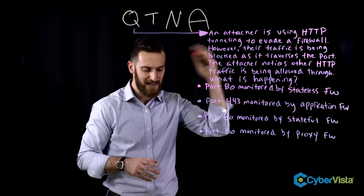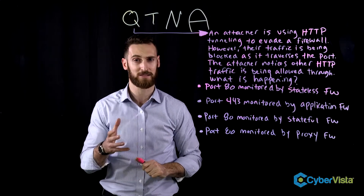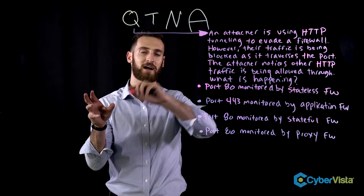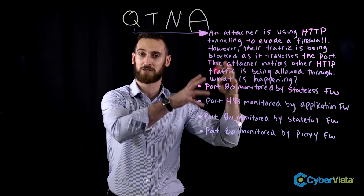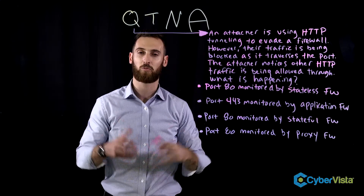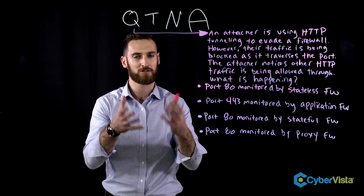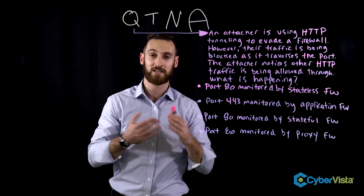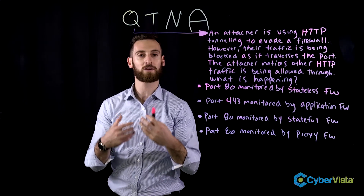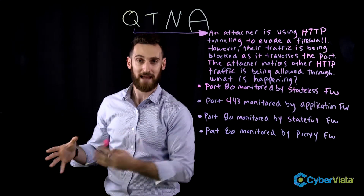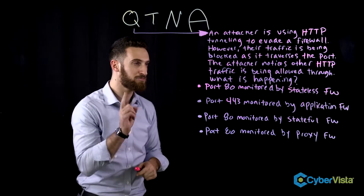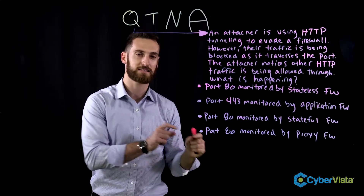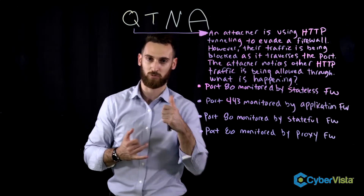So what's going on here? Well, an attacker is attempting HTTP tunneling. What's that? That's when we try to disguise data of a different type or kind and try to send it out or in on port 80, which is for HTTP traffic. So why would we want to target that port? Well, we know it's always open. Why? Because HTTP traffic is web traffic, so our organization is not going to outright block it. But the attacker is being blocked by something, and they also notice that normal, legitimate HTTP traffic is working just fine.